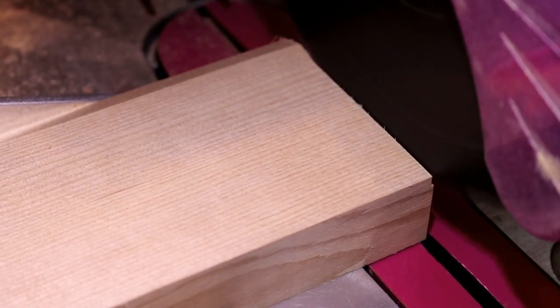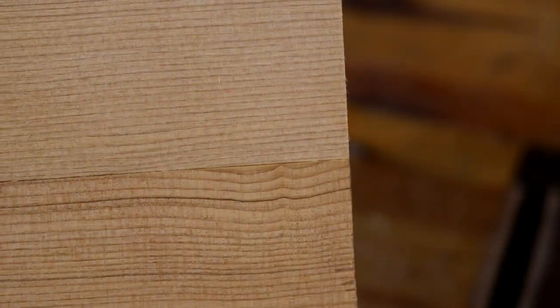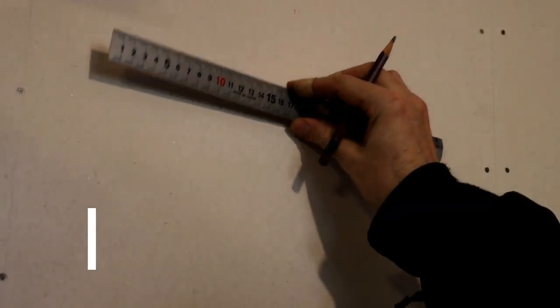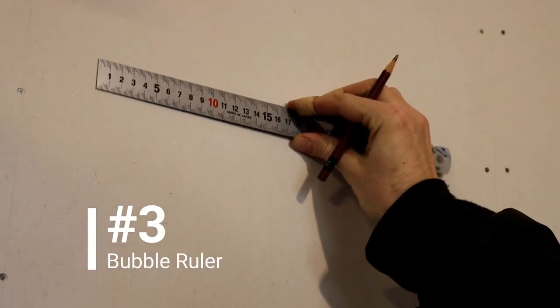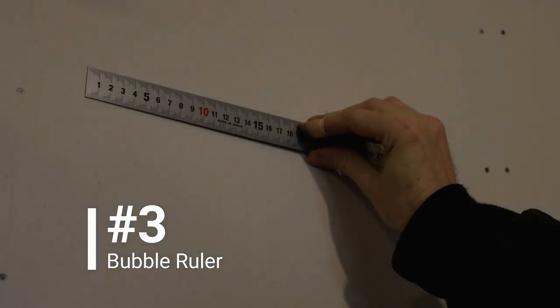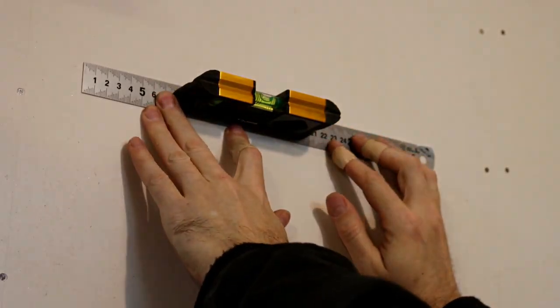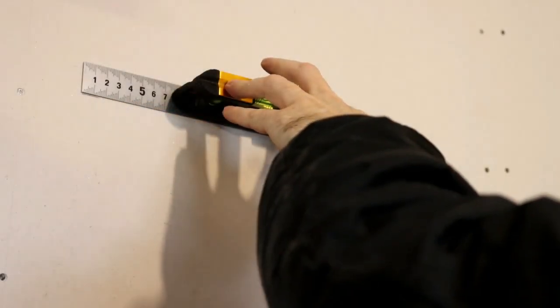You don't need an expensive laser level to make sure that your shelves are parallel to the floor. Just get a metal ruler and a magnetic bubble level. Attach the level so it's parallel to the edge of the ruler and put your lines. Nothing will roll off your shelves now.